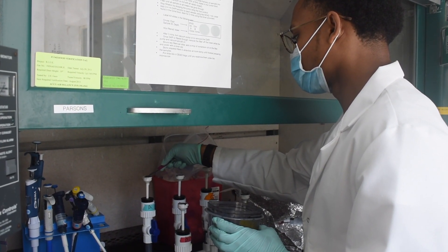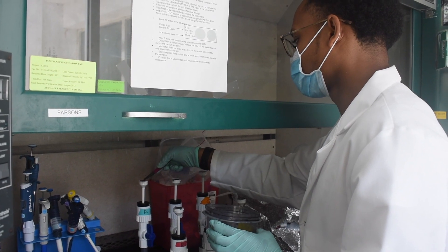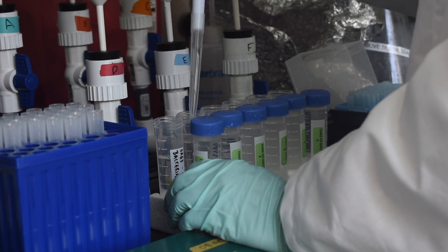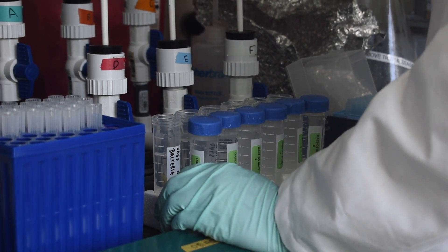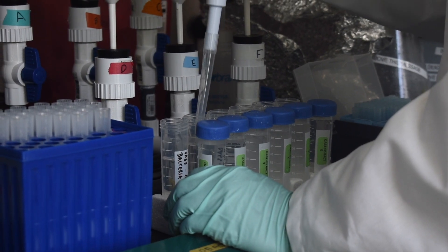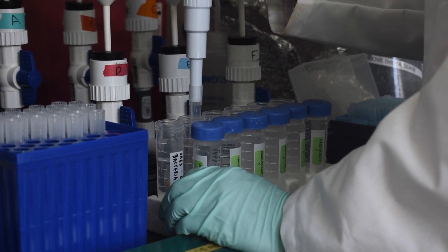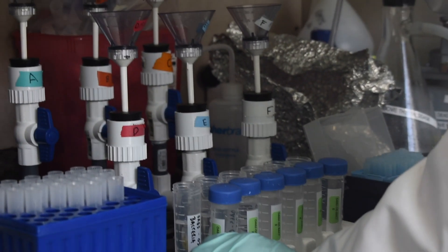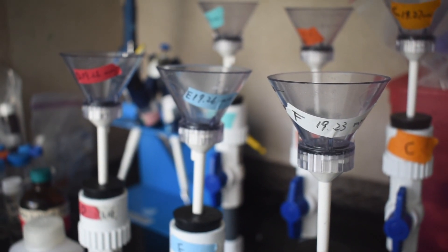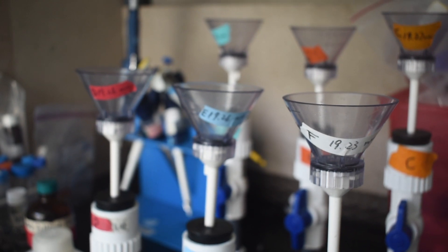We put the filter on the towers and then we clamp the tower to the base and we filter anywhere from 3 to 40 mils of seawater depending on where it's from. So for instance inshore in Bermuda we usually do 3 mils, offshore deep in the ocean we'll do 40 mils.